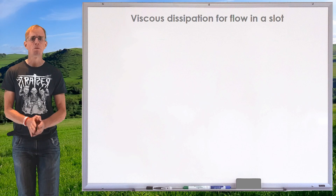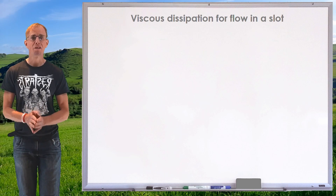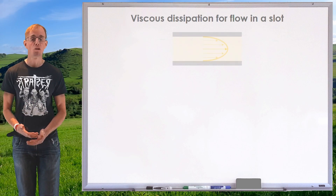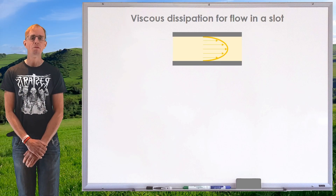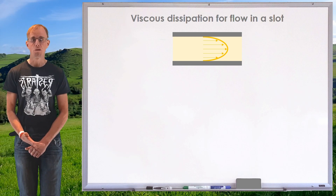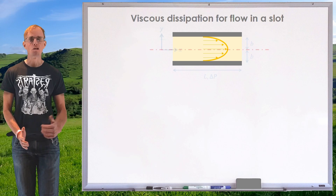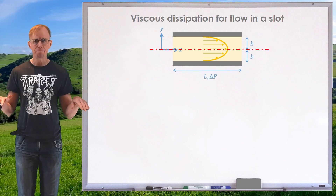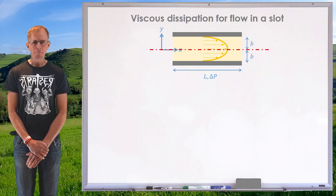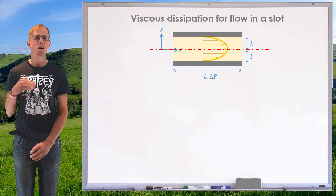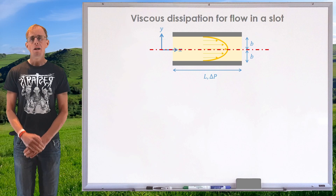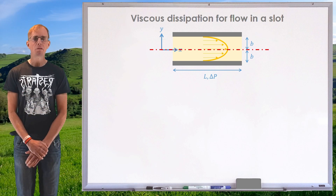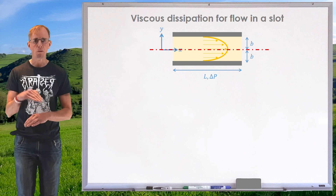I'm going to look at a simple Cartesian geometry and one-dimensional flow in a slot — the types of problems you will have seen before when solving the Navier-Stokes equations for the first or second time. I've got a symmetry line in the centre and I'm going to place my Cartesian axes on that symmetry line, because at y equals zero I've got a zero gradient condition, which makes boundary conditions easy to evaluate. The half width of the slot is b, so the entire thickness of flow is 2b.